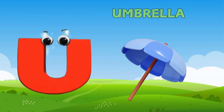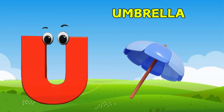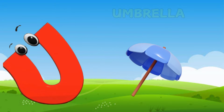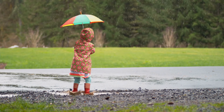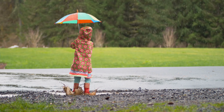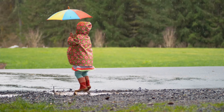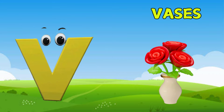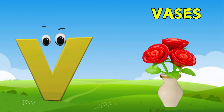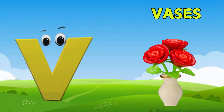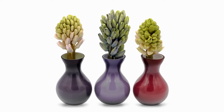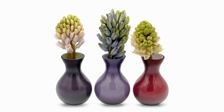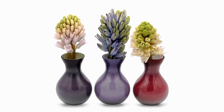U is for Umbrella. U, umbrella, U, umbrella, U, umbrella. B is for Veggies. Veggies, veggies, veggies, V, veggies.